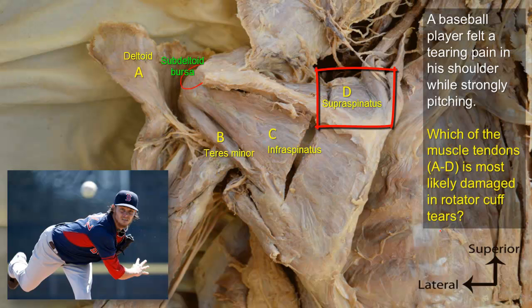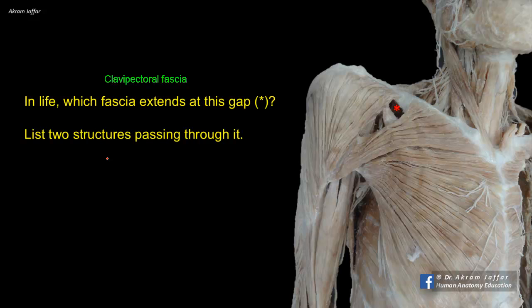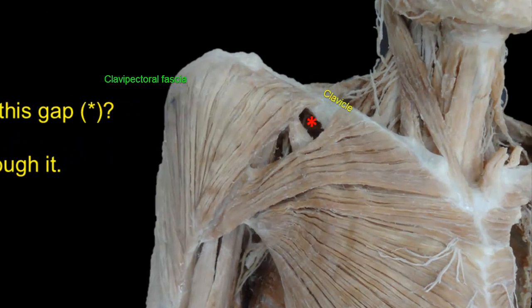So the tendon most likely damaged here is the supraspinatus tendon D. In life, which fascia extends at the gap indicated by the star? List two structures passing through it. The fascia is the clavipectoral fascia — a sheet of deep fascia filling the space between the clavicle and pectoralis minor, hence the name clavipectoral fascia.